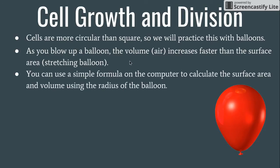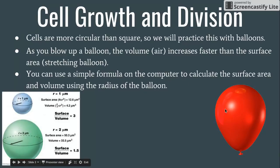What you can use is a relatively simple formula on the computer to calculate the surface area and volume using the radius of a balloon. So if you measure a balloon across the middle, we'll say we'll measure it at its widest point to figure out the radius. We'll calculate that radius into our formula, which will figure out the surface area and volume ratio for you.